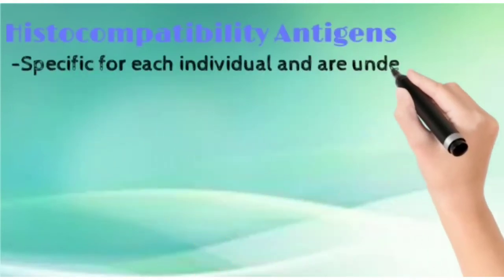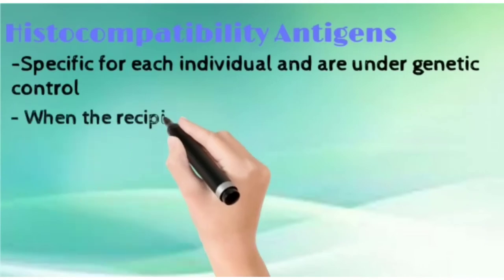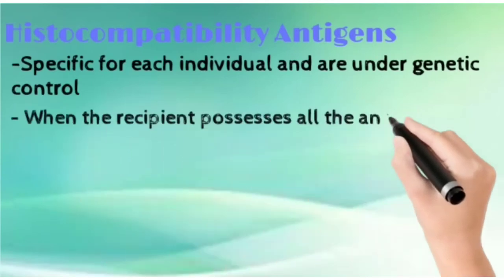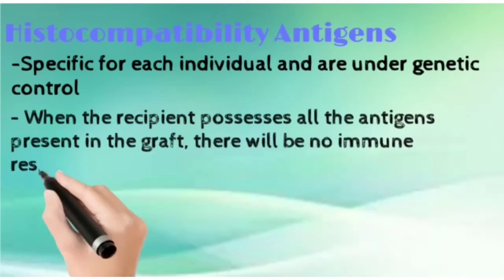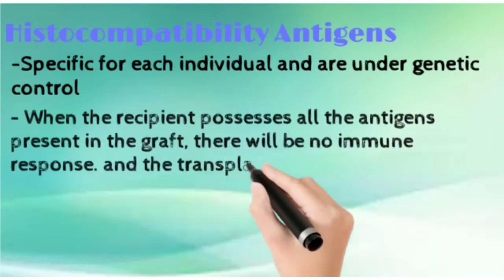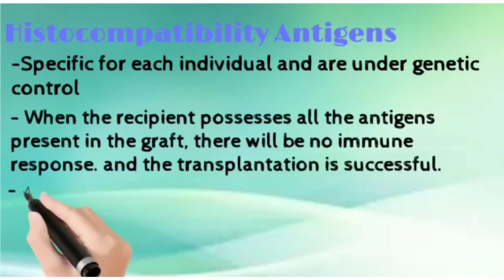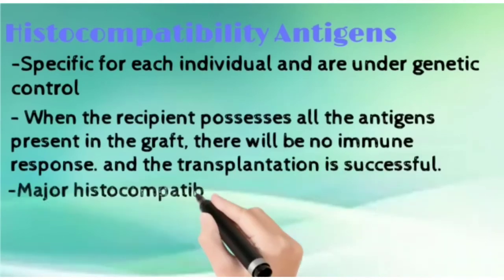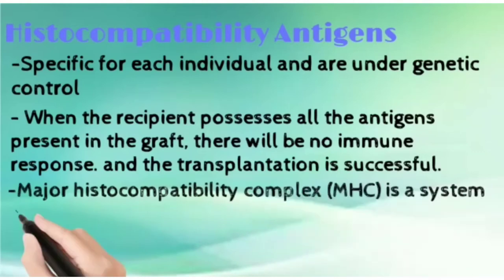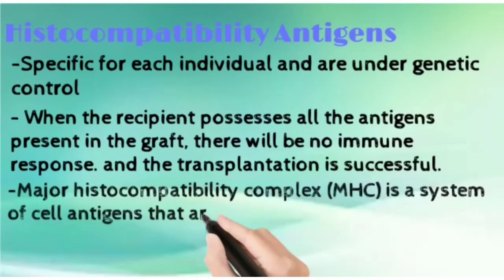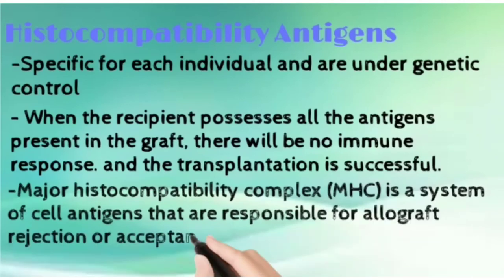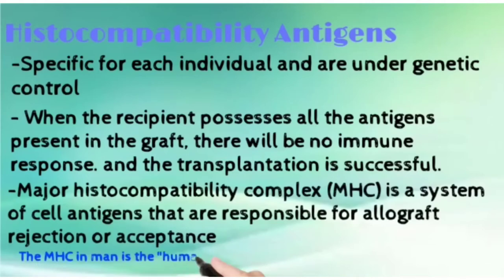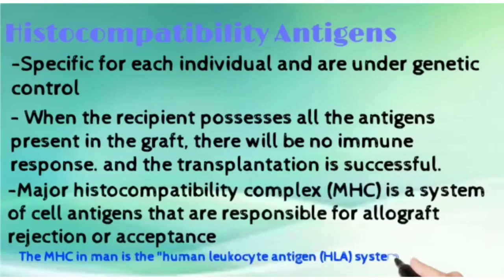Histocompatibility antigens are specific for each individual. When the recipient possesses all the antigens present in the graft, there will be no immune response and the transplantation becomes successful. The major histocompatibility complex (MHC) is a system of cell antigens responsible for allograft rejection or acceptance. In humans, this complex is the human leukocyte antigen (HLA) system.